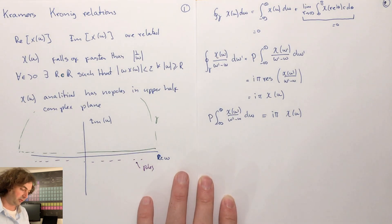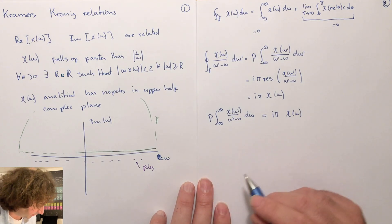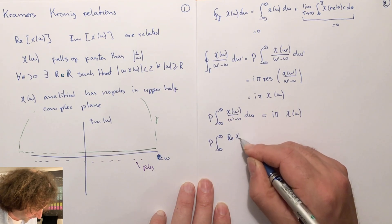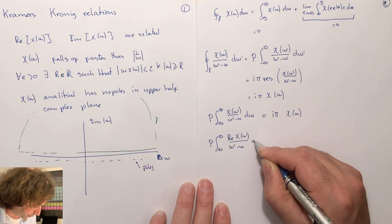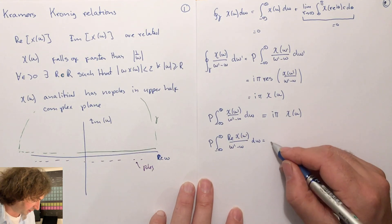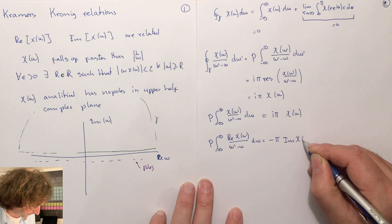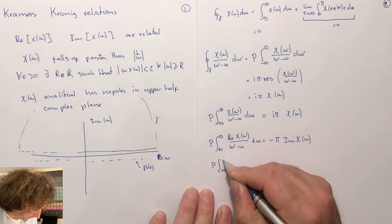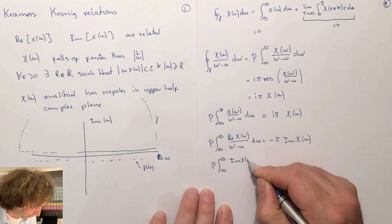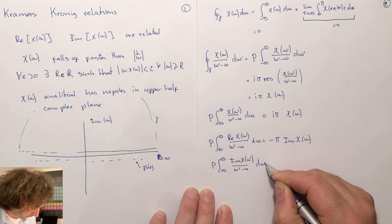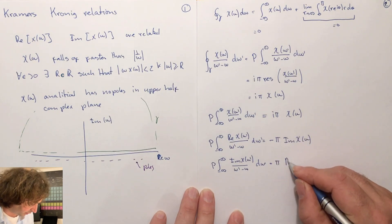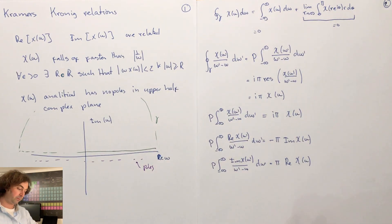So the Kramers-Kronig relation is: the principal value integral of χ(ω')/(ω' − ω) dω' = iπ·χ(ω). To see that this relates the real and imaginary parts, take the real part of both sides: the principal value integral of Re[χ(ω')]/(ω' − ω) dω' gives the imaginary part of χ(ω). Similarly, taking the imaginary part gives π times the real part of χ(ω). So once you know the real or imaginary part, you can always retrieve the other by the Kramers-Kronig relations.